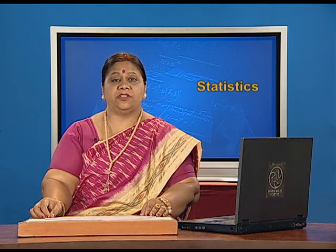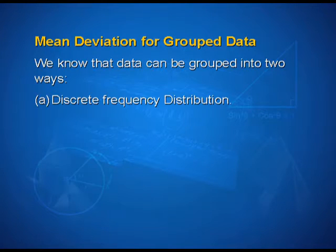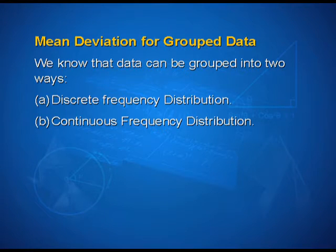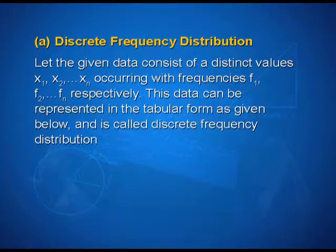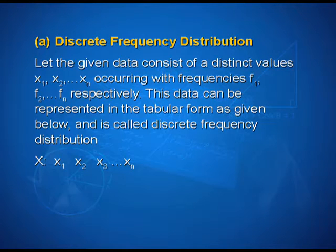Now let us discuss mean deviation for grouped data. We know that data can be grouped in two ways: first, discrete frequency distribution; second, continuous frequency distribution. Let us discuss the method of finding mean deviation for both types. For discrete frequency distribution, let the data consist of distinct values x1, x2, ..., xn occurring with frequencies f1, f2, ..., fn respectively.